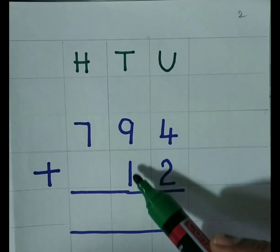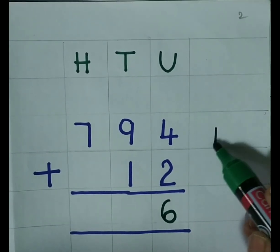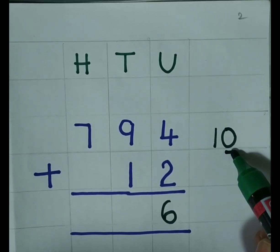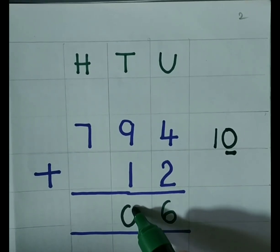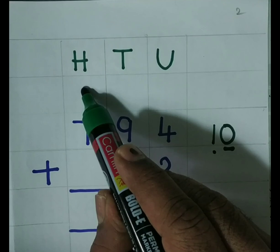9 plus 1, 10. Now, 10 means 2 digit number. So, what we should do? This 0, we have to write at the 10th place. 1, we have to carry over at the 100th place.